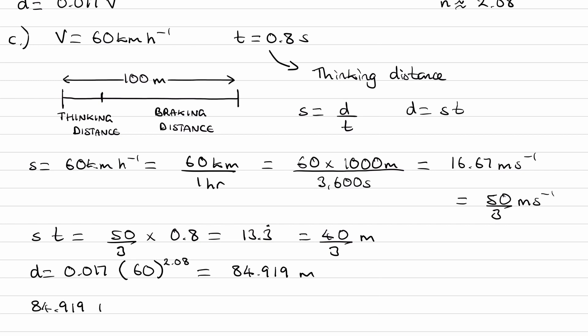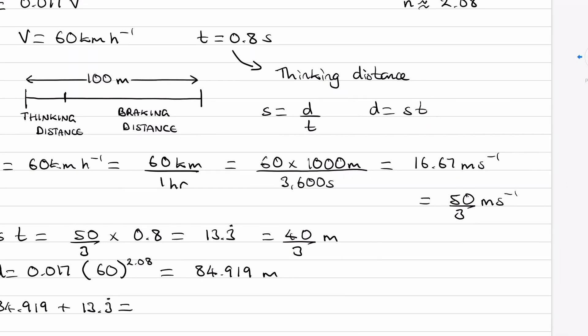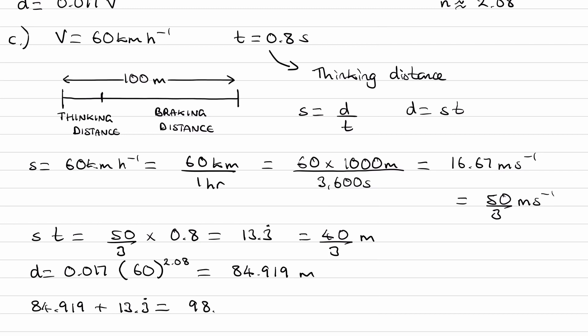So add the two distances up: 84.919 plus 13.3 recurring, and we end up with 98.3 meters. And that's less than 100 meters, therefore he will stop in time.